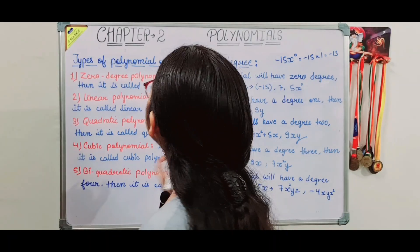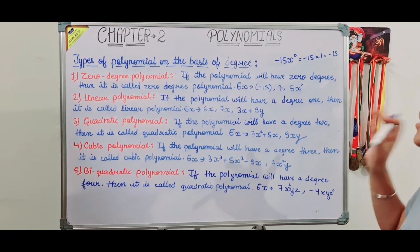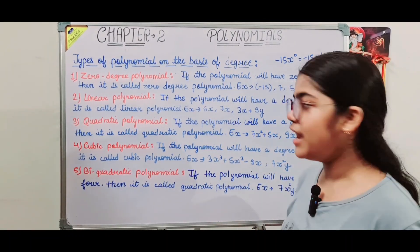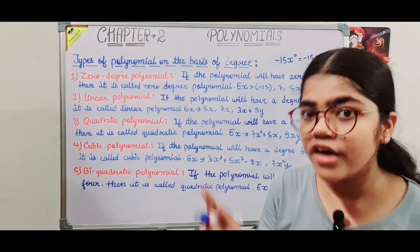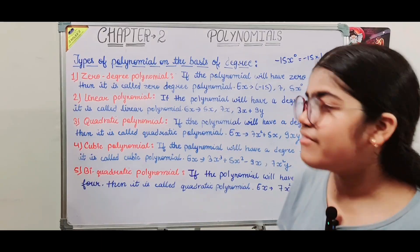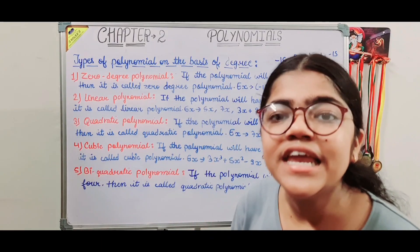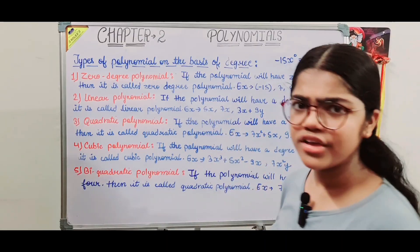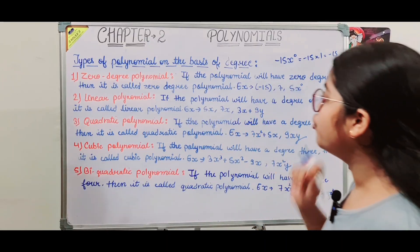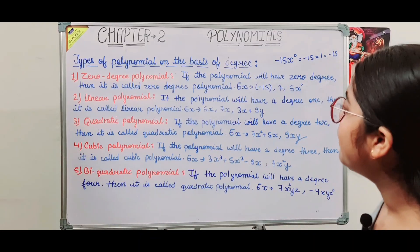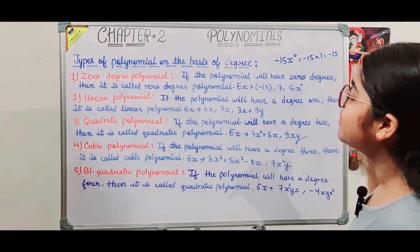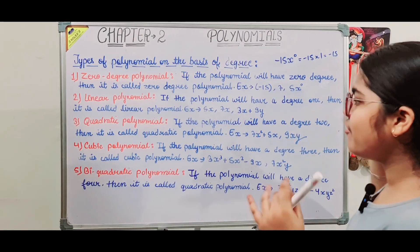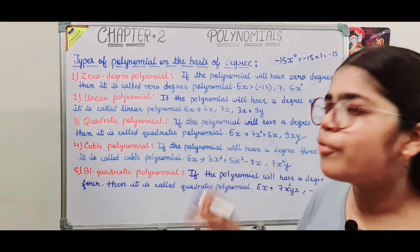Second, the linear polynomial: if the highest power of the variable in the polynomial is 1, then it is called a linear polynomial. Examples: 5x has power 1, 7x has power 1, and 3x plus 9y — both x and y have power 1. So all of these are linear polynomials.